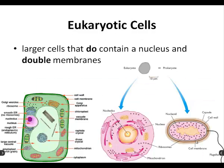Next word to get onto your bingo board: eukaryotic cells. These are larger cells that do contain a nucleus and double membranes. As you can see from the picture, eukaryotes are much, much larger than the prokaryotes, and they also have a wider variety of organelles due to that double membranous technology. Make sure you have eukaryotic cells written on your bingo board.